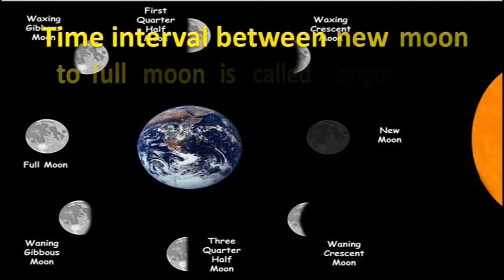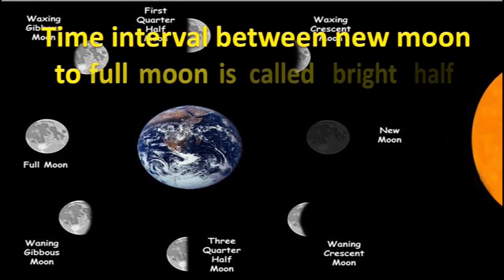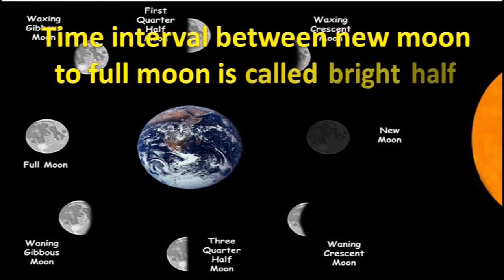The time interval between new moon to full moon is called the bright half, because the bright part of the moon gradually increases from new moon to waxing crescent moon, first quarter half moon, waxing gibbous moon, and then full moon.